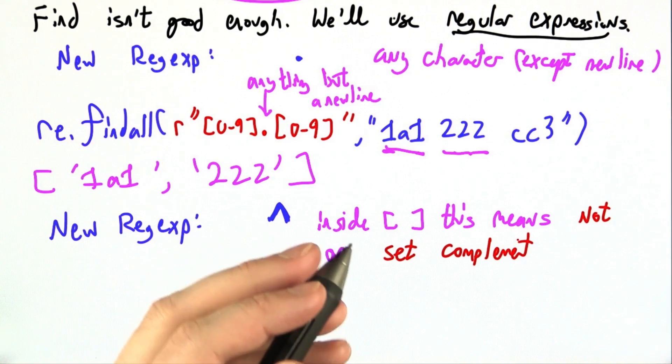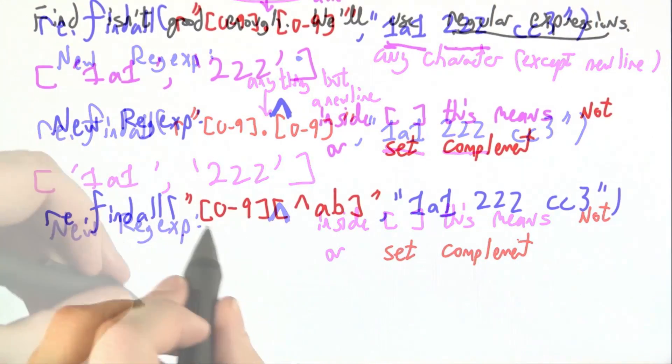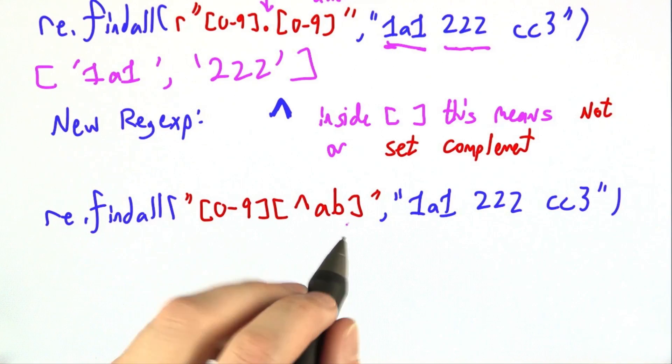Sometimes it's nice to be able to say anything except a digit, or anything except a number, or anything except p. Here we're looking for 0 through 9, followed by anything that's not a, and also not b.